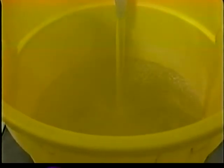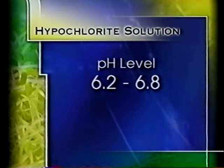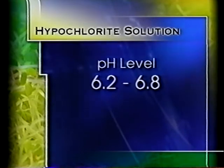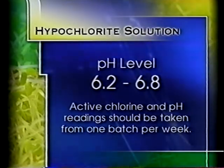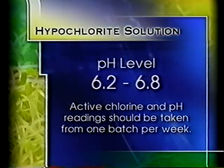Hardness results from minerals, especially calcium and magnesium, in water. The pH is a measure of acidity or alkalinity. The pH of the prepared hypochlorite solution should be between 6.2 and 6.8. Measurement of the concentration of active chlorine and pH of the solution should be taken from at least one batch per week. Commercial laboratories are available to provide this service. If results are outside the accepted range, guidance should be sought from the laboratory.